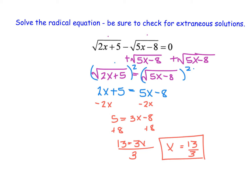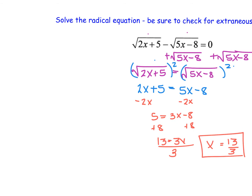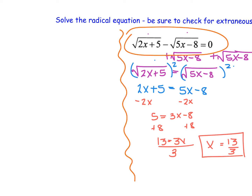Remember that we always need to check our answers and confirm that they are in fact correct. So I'm going to plug this value into the original equation and check that it makes it true. We're going to check that x = 13/3 works by evaluating the square root of 2 times 13 over 3 plus 5, minus the square root of 5 times 13 over 3 minus 8, and verify that equals 0.